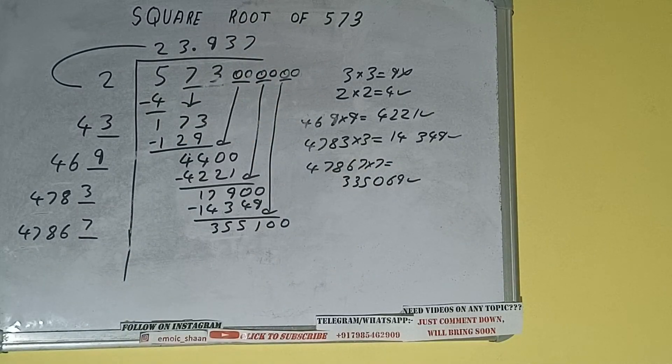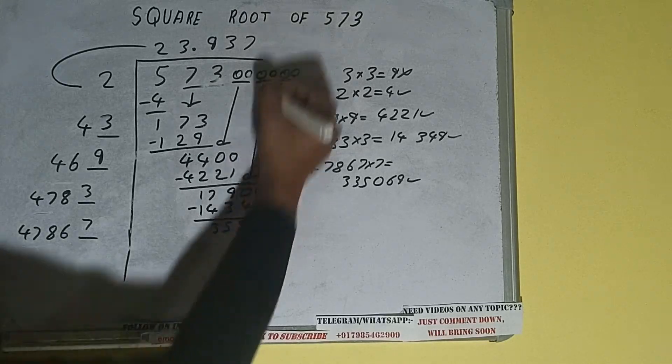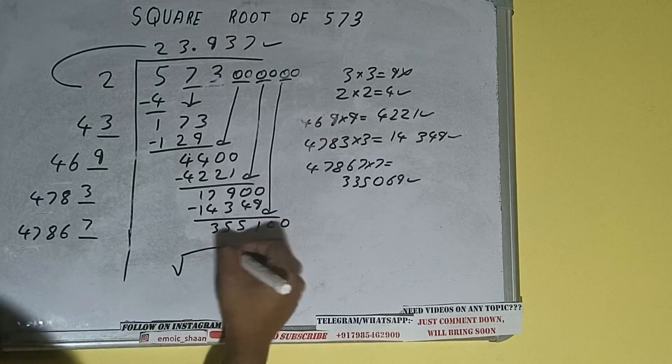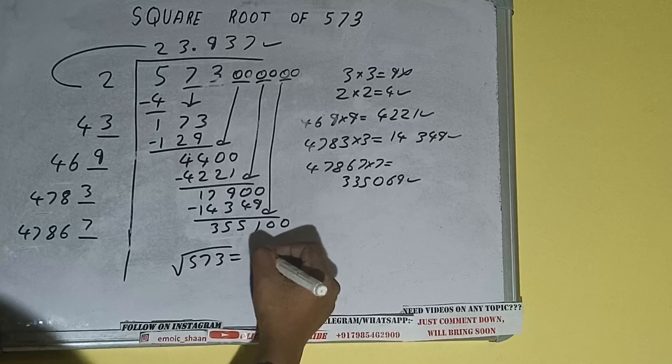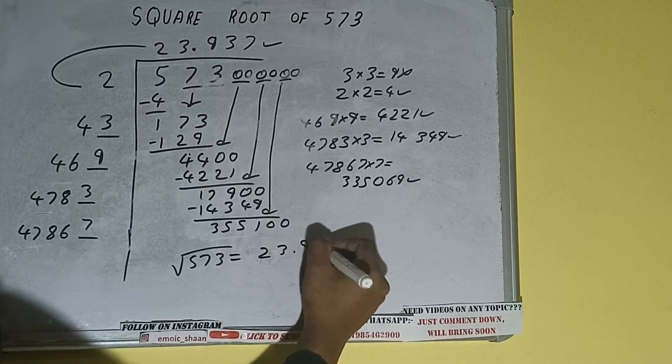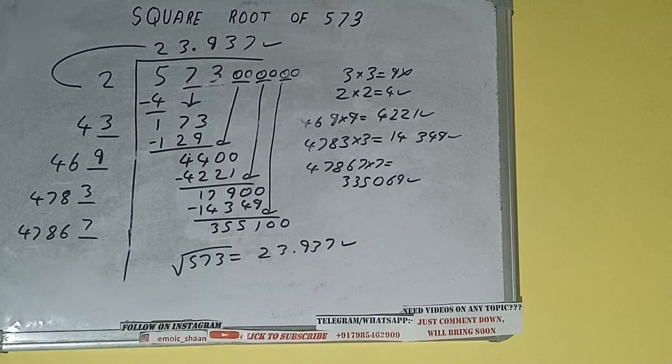But we don't need to calculate because we got the answer correct up to 3 decimal places. So square root of 523 will be 23.937. That will be the answer.